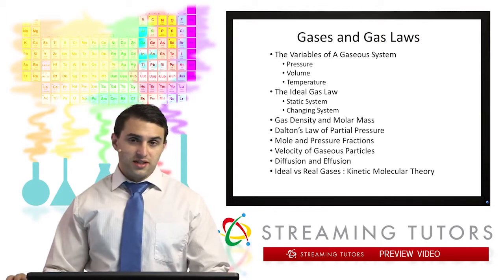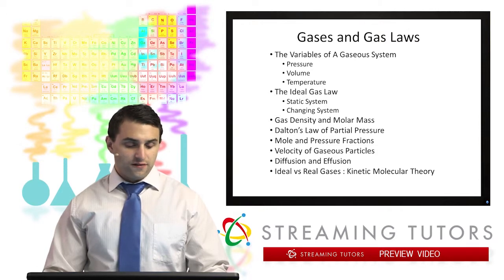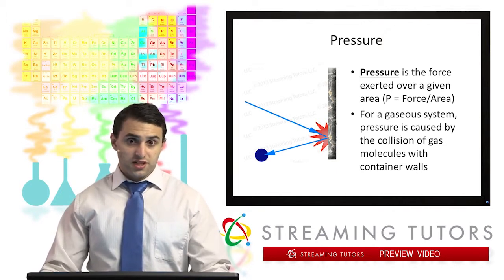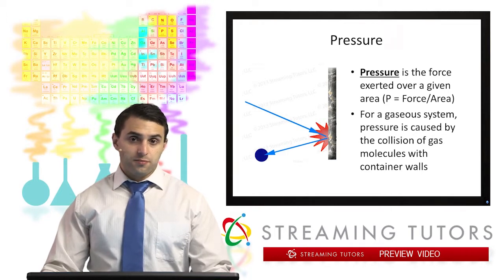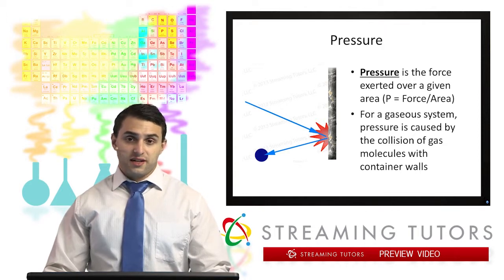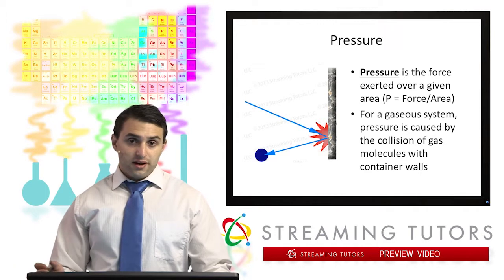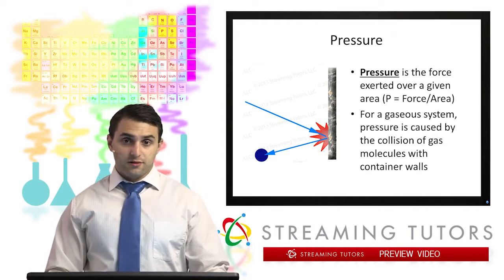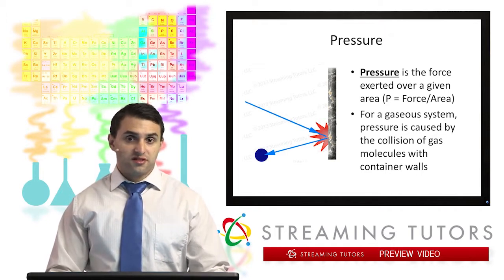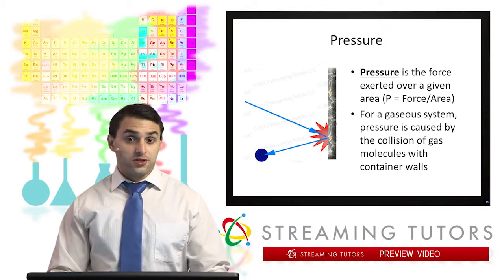To start with, we need to define a few different terms that apply to gases. The first one is pressure. The pressure of a gaseous system is defined as the force over a given area. For a gas system in particular, that corresponds to the force of individual gas particles on the walls of the container. When a gas particle hits the wall of a container, it applies a certain force, and the aggregation of all gas particles colliding with the container walls is what gives rise to the pressure of a gaseous system, as you see in this little image over here.